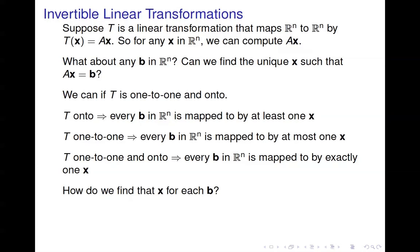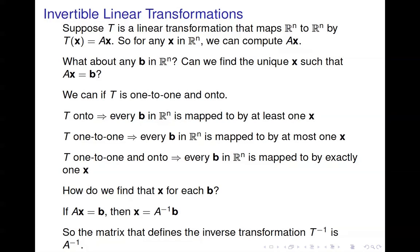So how do we find that x? Given a particular vector b, we solve Ax = b. If we know A is invertible, we simply multiply A inverse times b. So the matrix that defines the inverse transformation T inverse is simply A inverse. A takes you forward — from x, you compute Ax to get b. To reverse that, you multiply by A inverse. T is defined by A; T inverse is defined by A inverse.